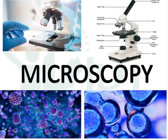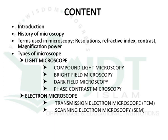In this video we will discuss microscopy, an important topic of pharmaceutical microbiology for third semester. We will cover the introduction, history of microscopy, key terms regularly used such as resolution, refractive index, contrast, and magnification power, and the detailed structure of different types of microscope: light microscope, dark field microscope, phase contrast microscope, and electron microscope, including transmission and scanning electron microscope.